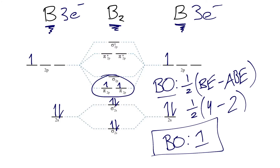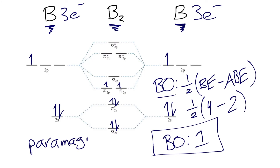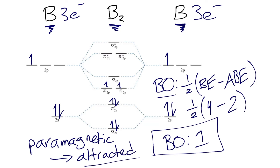Because we have unpaired electrons in the pi 2p molecular orbitals, the B2 molecule must be paramagnetic. B2 is paramagnetic, which means that the B2 molecule is weakly attracted to an external magnetic field.